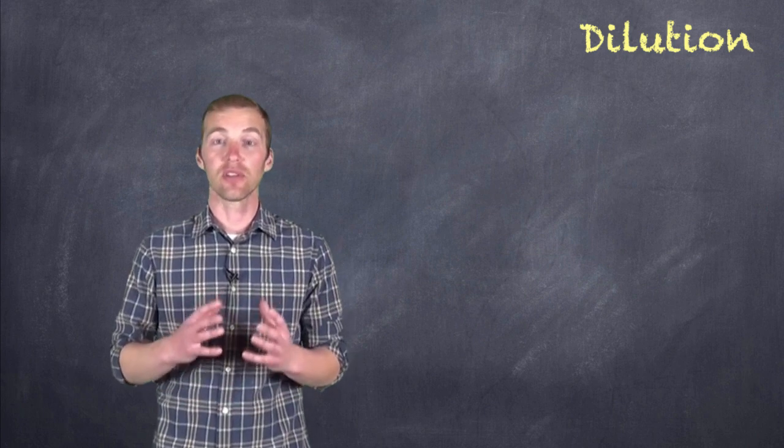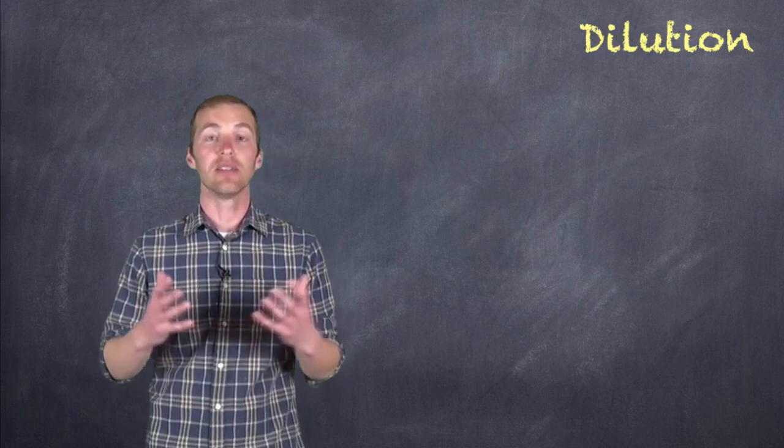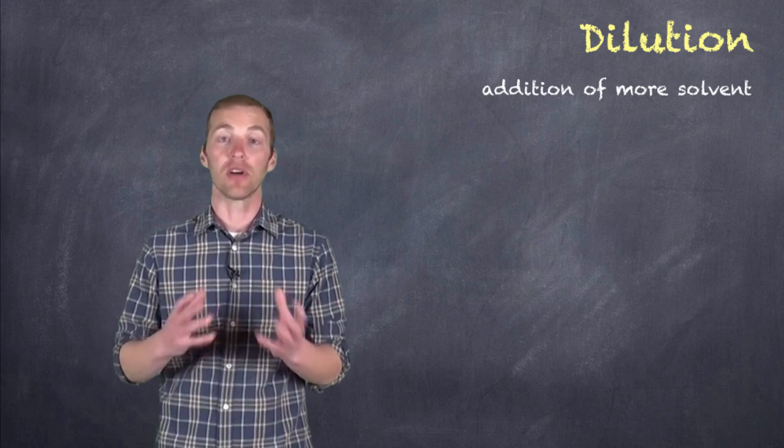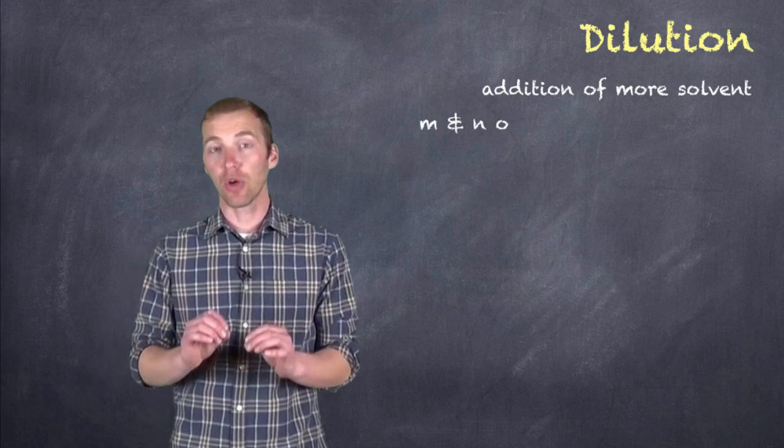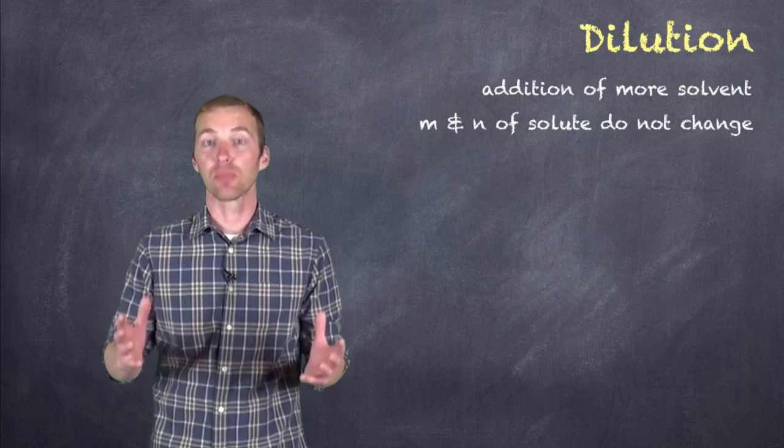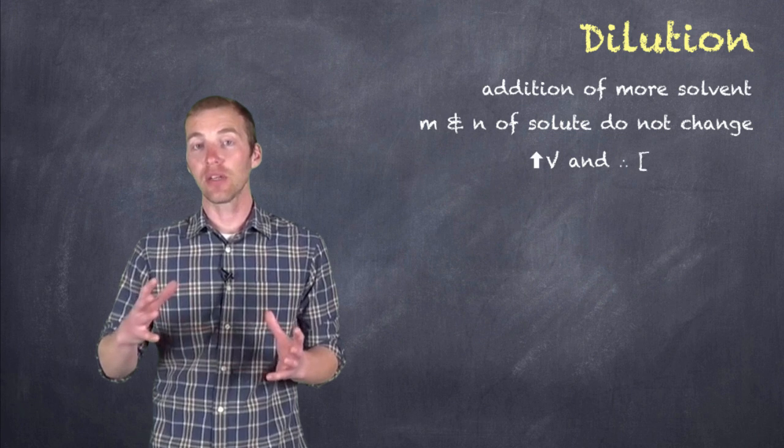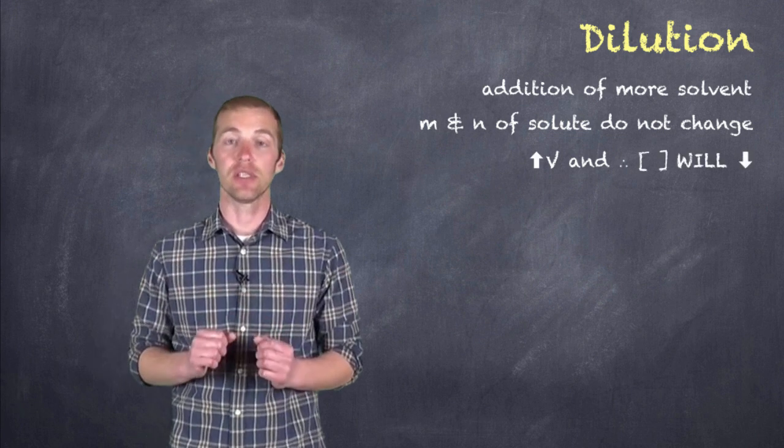Now the key thing in dilution is understanding that all we're doing is adding more solvent. That is, we're increasing the volume of our solution. The amount of the solute doesn't actually change in this process. All that changes is the volume. The volume increases and therefore the concentration decreases.